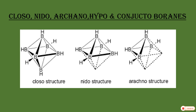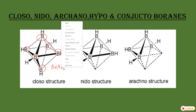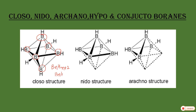The first one is the Closo structure. In the Closo borane structure, all the corners of a polyhedra are occupied by boron atoms. The general formula for Closo is BnHn+2, or we can write it as BnHn²⁻.